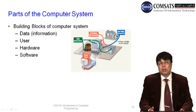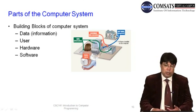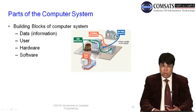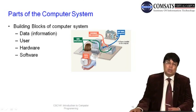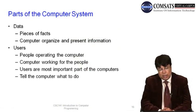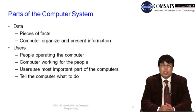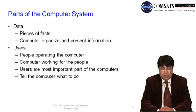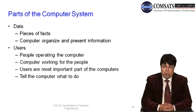Data is basically a piece of fact, and the computer organizes and presents it as information. Users are the persons who operate the computer and for whom the computer carries out tasks. Users are the most important part of the computer — they tell the computer what to do, and it is the demands of users that drive computers to become faster, with more working space and more storage. Hardware refers to the physical components of a computer — things that are tangible, that you can touch and feel, such as the screen, the system box, keyboard, and mouse.